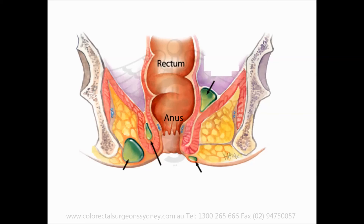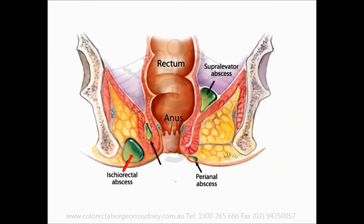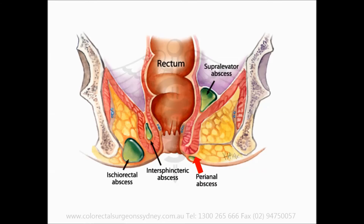Anal abscess is a very common condition that may present with symptoms of pain, swelling, heat, or even a purulent discharge from the anus, and are classified according to their location: being supra levator, if located above the pelvic floor; ischiorectal, if within the fat of the ischiorectal space; intersphincteric, if they occur between the internal and external sphincter; and perianal, if they occur just underneath the skin adjacent to the anus.